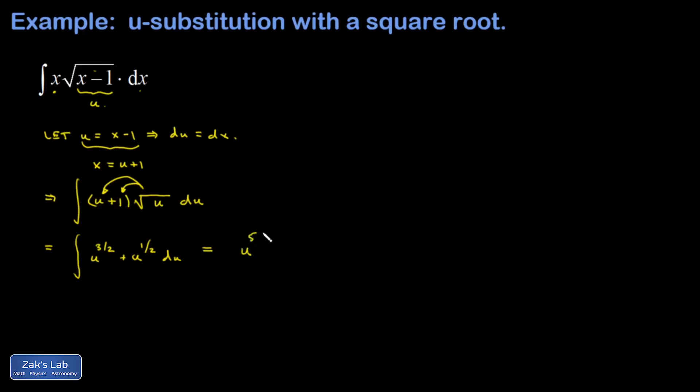So I have u to the five halves divided by five halves, which is multiplying by two fifths. Second term, u to the three halves divided by three halves, so that's two thirds times u to the three halves, plus an arbitrary constant c.